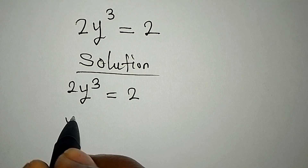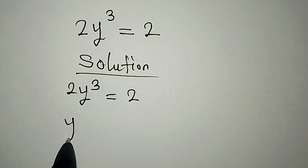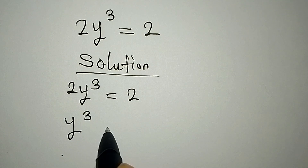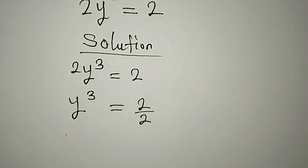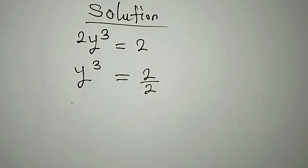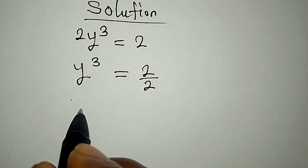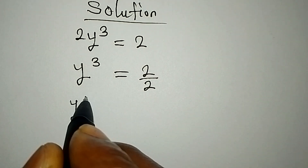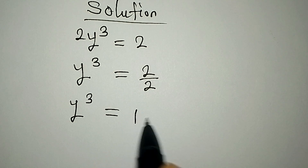So from here, we have y to the power of 3 equals 2 over 2, because we have to divide both sides by 2. Now y to the power of 3 is equal to 1.